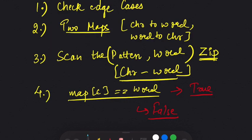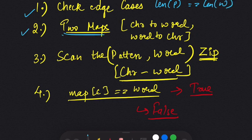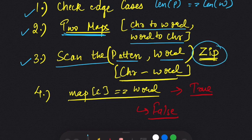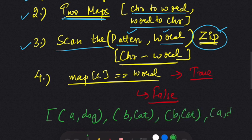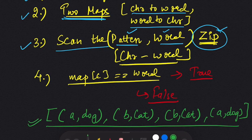So to summarize: first, check that the length of the pattern equals the length of the words list. Second, create two maps — a character-to-word map and a word-to-character map. Third, scan the pattern and words using zip, which clubs each character with its corresponding word and returns tuples like (a, dog), (b, cat), (b, cat), (a, dog), making it easy to loop over both simultaneously.